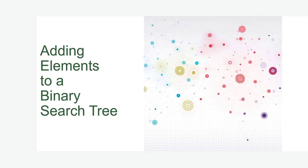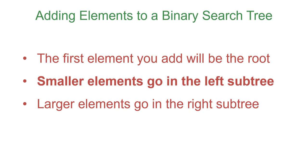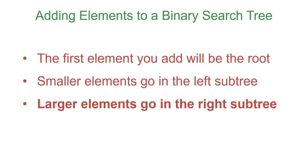In this video, we're going to walk through adding elements to a binary search tree. As a reminder, to add elements to a binary search tree, the first thing you add will always be the root. Then smaller elements will go in the left subtree, larger elements will go in the right subtree, and that holds anywhere inside the binary search tree.